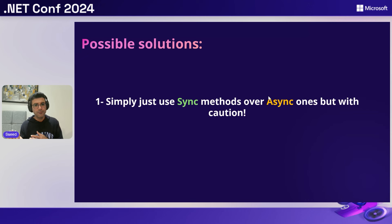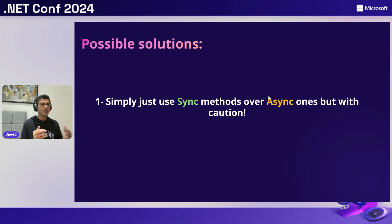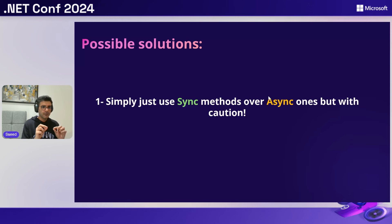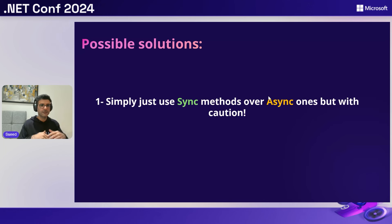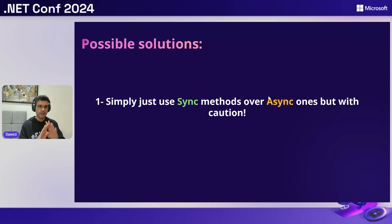The first and simplest solution is using sync over async methods. When sync is 50 times faster than async, why not just use sync? We need to be careful because using sync APIs can make your application less scalable. However, if you have a very specific table — one or two tables in your database — that you know will have nvarchar max with lots of megabytes of data, you can use the sync method there and add a comment explaining why.